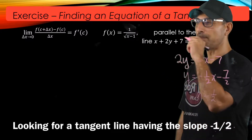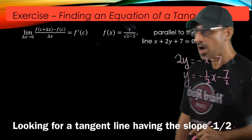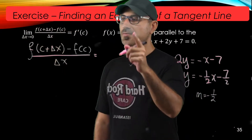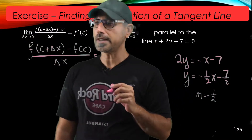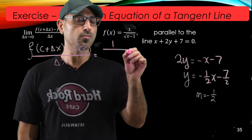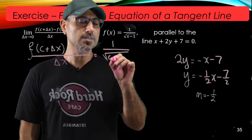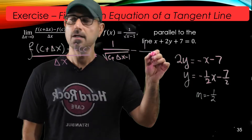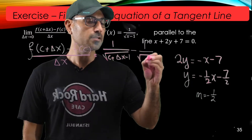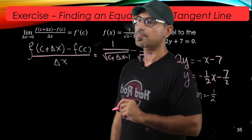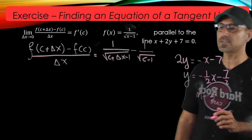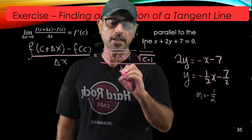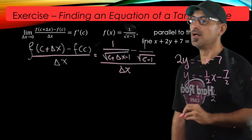We're looking for the point c. Let me write this expression: f(c + Δx) equals 1 over radical(c + Δx minus 1), minus f(c) which is 1 over radical(c minus 1). So we have two rational expressions at the top, all divided by Δx.